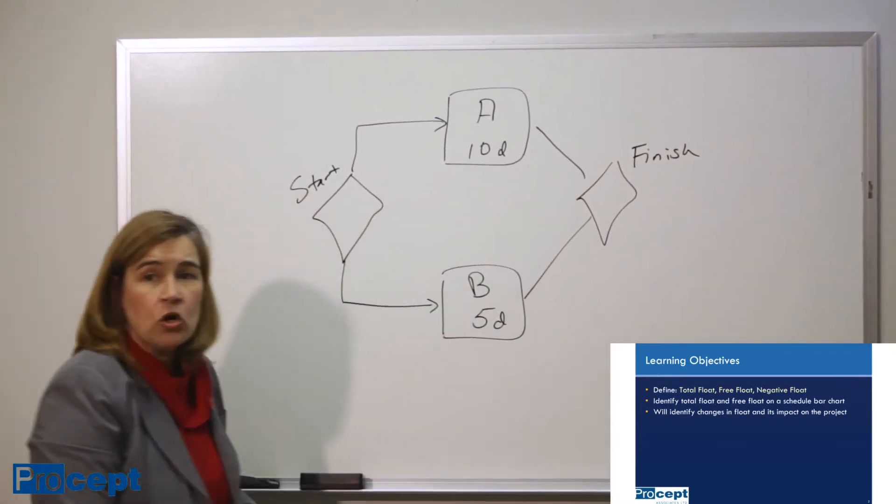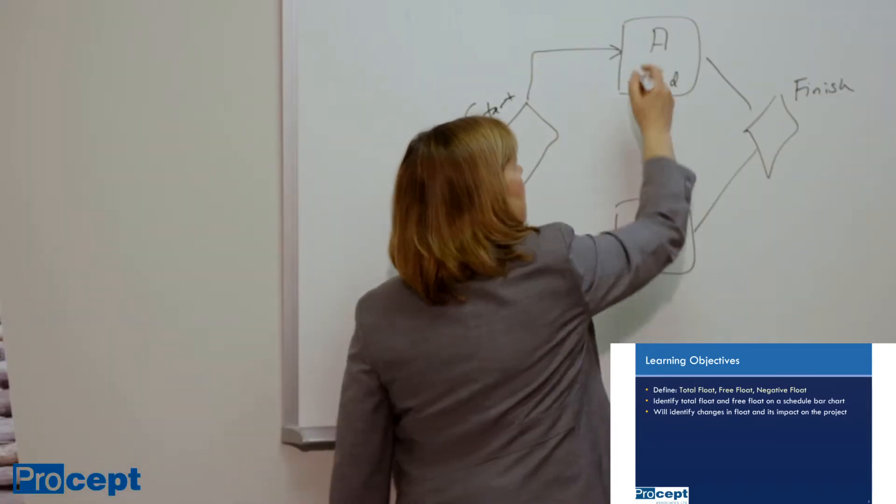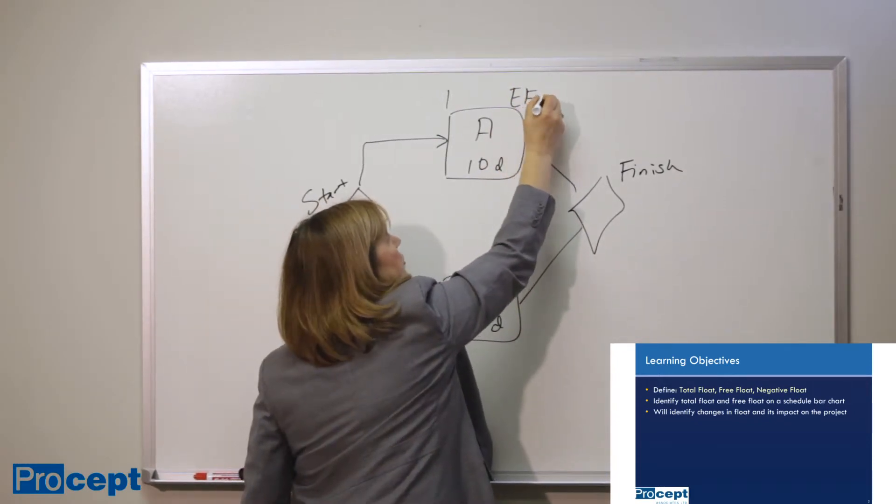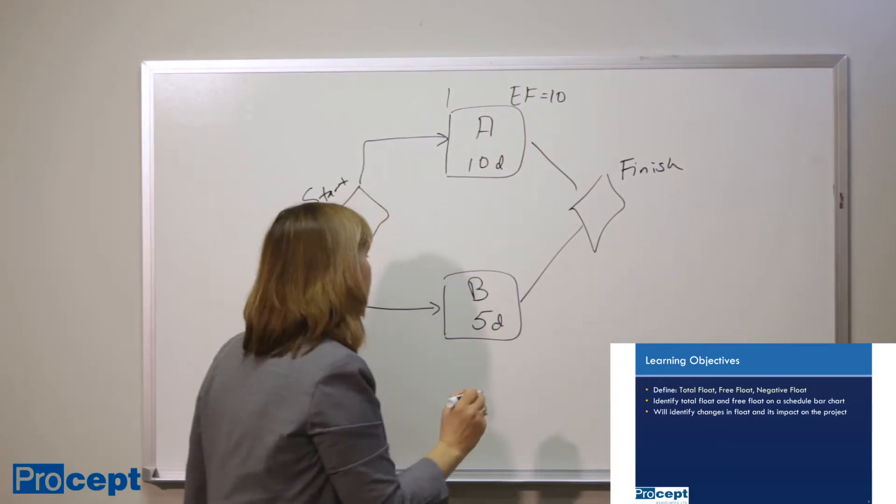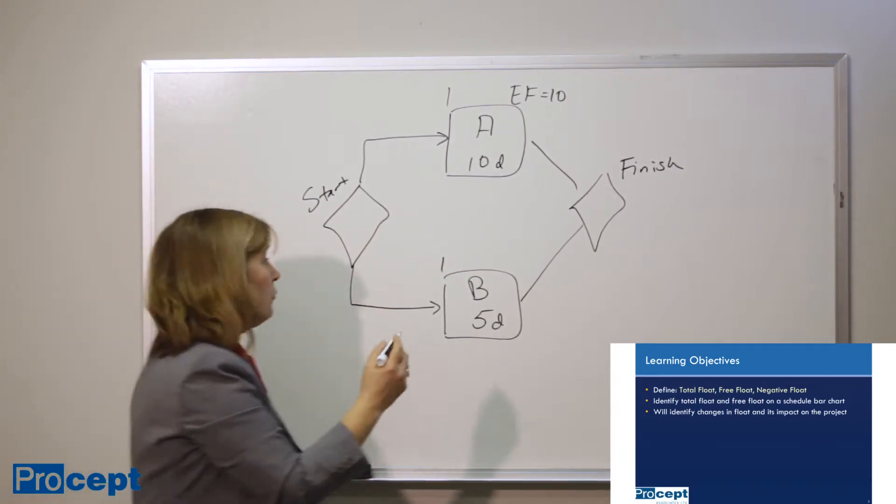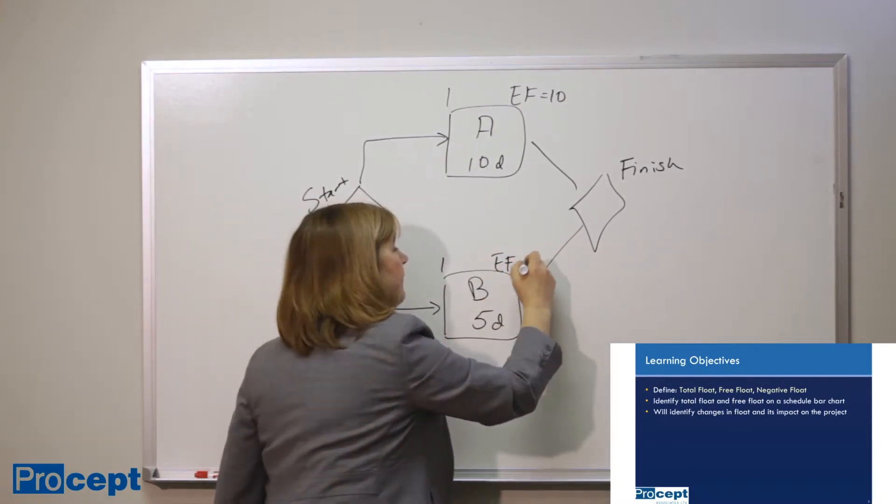So we understand that if we start both activities at the same time, if activity A starts on day 1, it will finish, we call it the earliest possible finish time, on day 10. If activity B equally starts on day 1, it will finish on day 5.